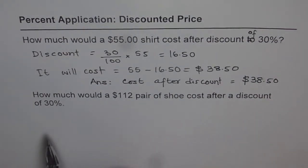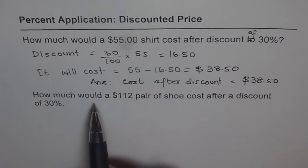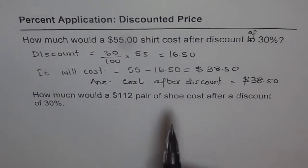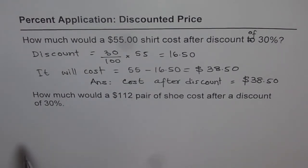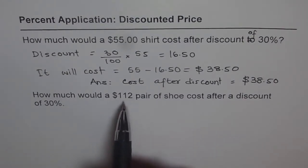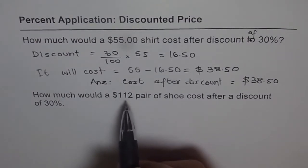Second question is very similar: how much would a $112 pair of shoes cost after a discount of 30%? Now if you have a discount of 30% on this, it is going to cost you much lesser. Since it is going to cost you lesser, you have to take away something. How much? 30% of $112.